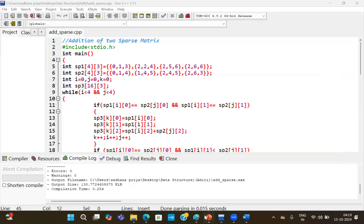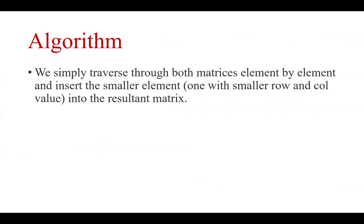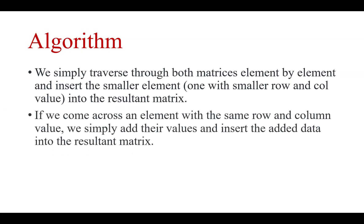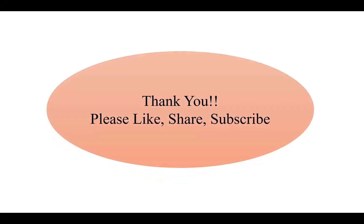So this is the addition of sparse matrices. The simple algorithm: traverse both matrices element by element and insert the smaller element. First compare the row index — if a row is less, copy it. If rows are the same, compare the column and copy the one with the lesser column value. If we come across the same row and same column, copy the row and column index and add the non-zero values. Hope you are able to understand the concept of addition of sparse matrices. Thank you for watching — please like, share, and subscribe to the channel. Thank you, bye.